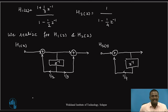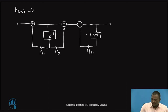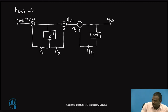Now we cascade these two direct form 2 realizations to get the cascade form realization for the given IIR system. The input x(n) = x1(n) feeds into the first section, producing y1(n) at the intermediate point. This y1(n) becomes x2(n), which feeds into the second section, and we get y2(n) = y(n) as the final output.